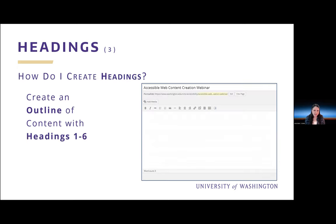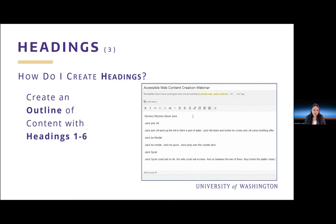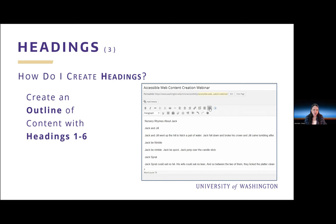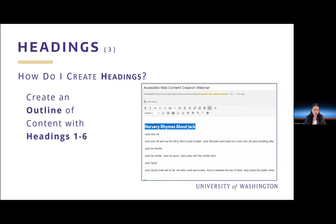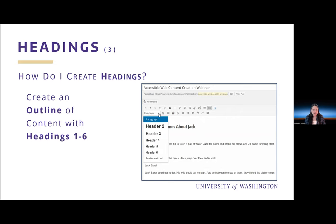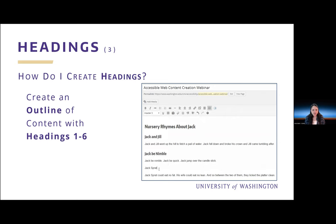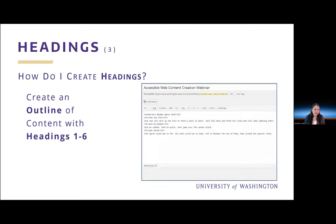So how do I create accessible headings? Remember, create an outline of content with headings one through six. For example, if I'm using WordPress, I add text to the page, click the toolbar toggle to reveal more tools, then select text and use the drop-down to assign the heading level, repeating this process for each heading on the page. I didn't designate the first heading as h1 because when I created the page title, WordPress automatically used it for the h1. Here is what that looks like in the underlying markup — I can see I have a proper heading structure.